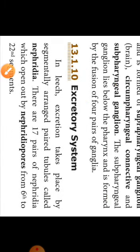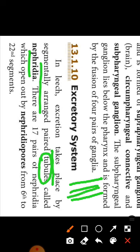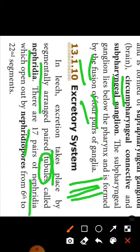Next topic is excretory system. Excretion takes place by segmentally arranged pair tubules called nephridia. Pores means holes. There are 17 pairs of nephridia that open out by nephridial pores from the 6th to 22nd segments.